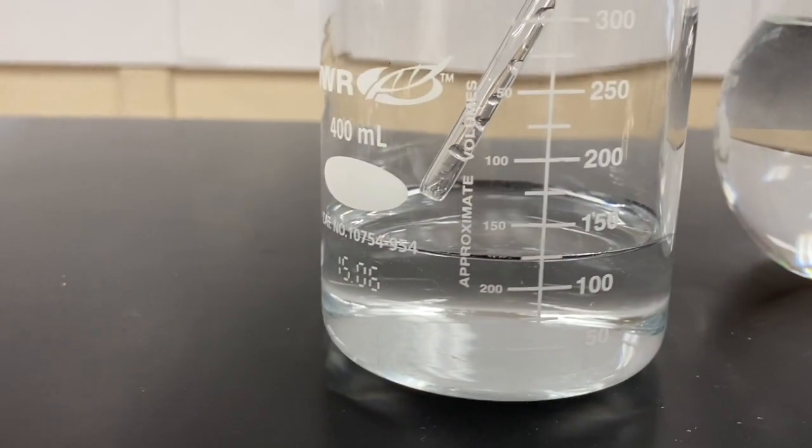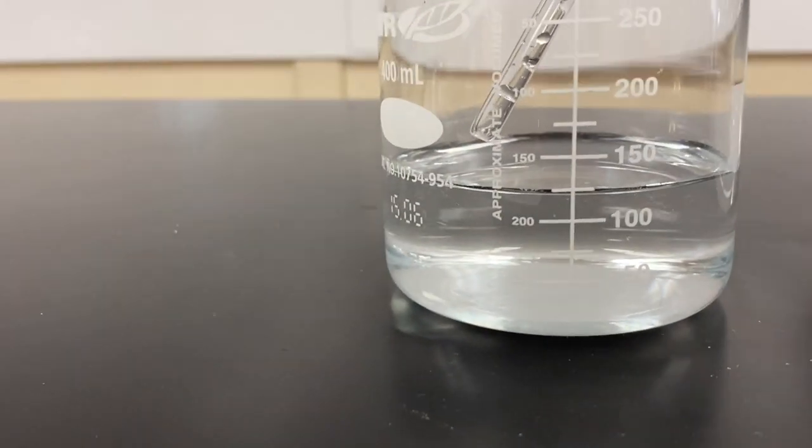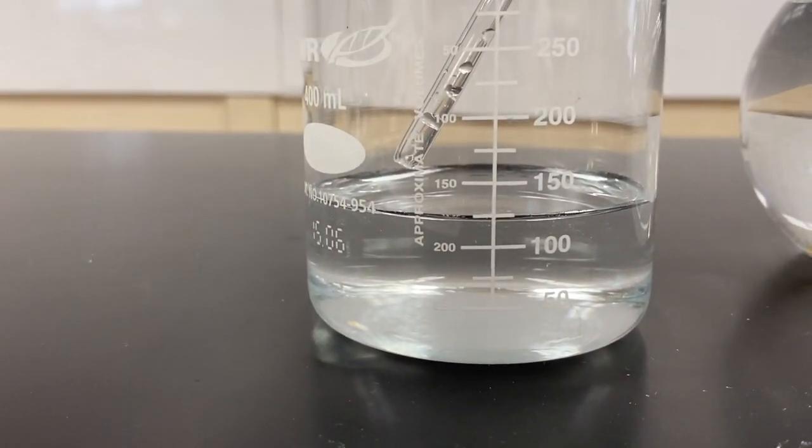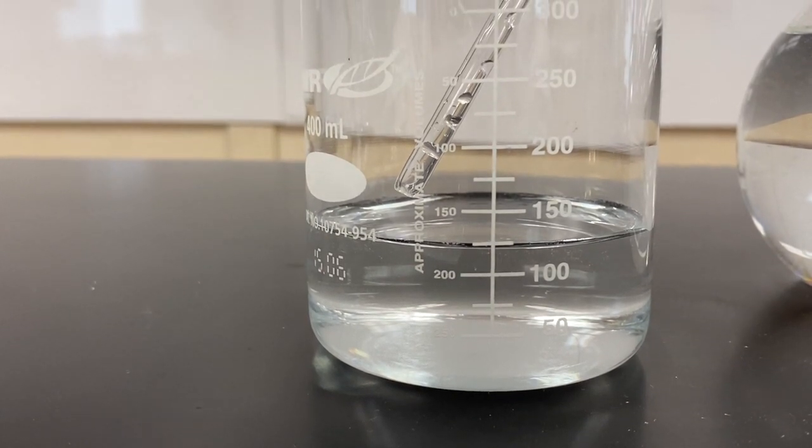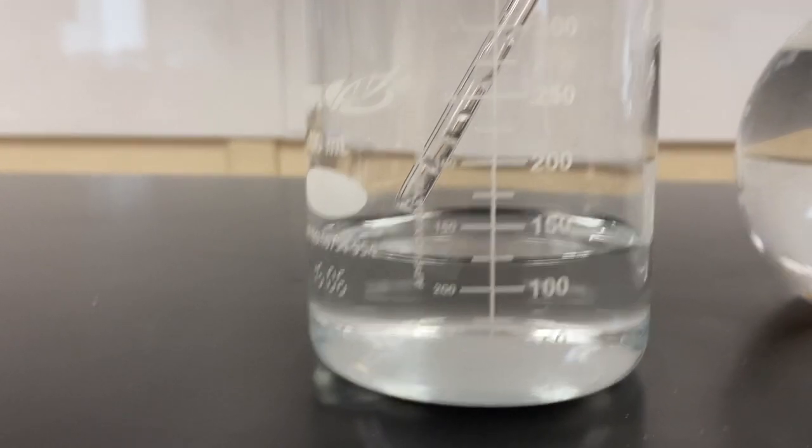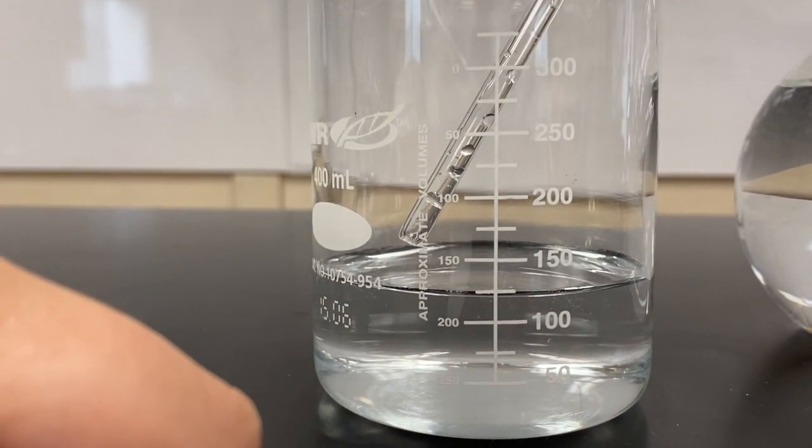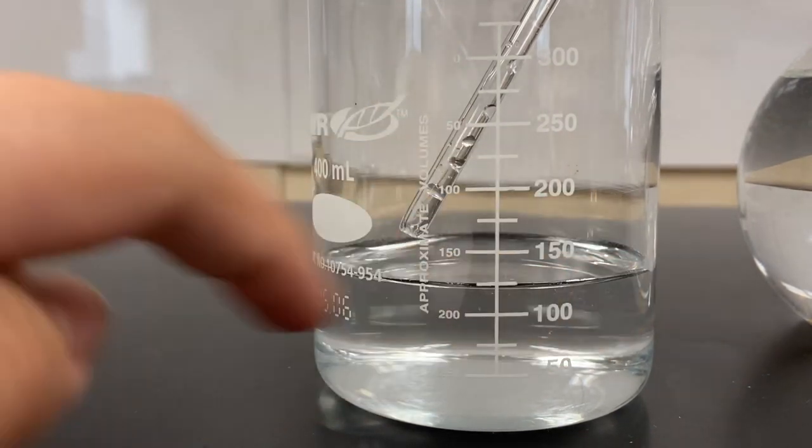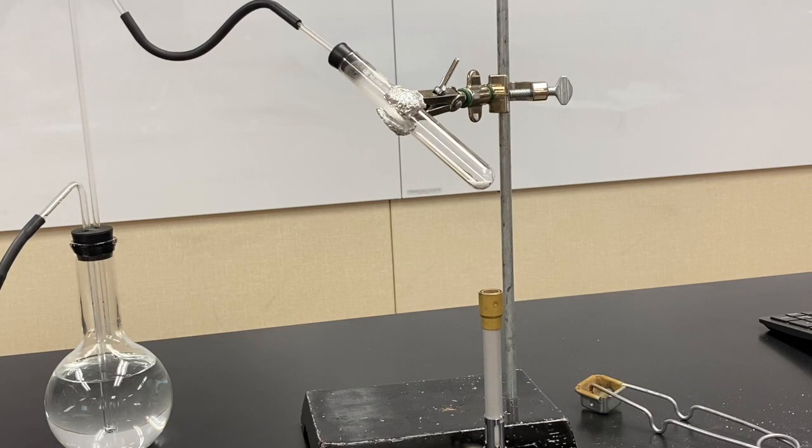And here's our beaker filled with water. And you can see it's somewhere around 125 milliliters of water. These beakers are not very precise, because they're not graduated cylinders, but it's going to be somewhere around the 125 mark, maybe 120. It looks like the meniscus is a little bit below that 125 mark.